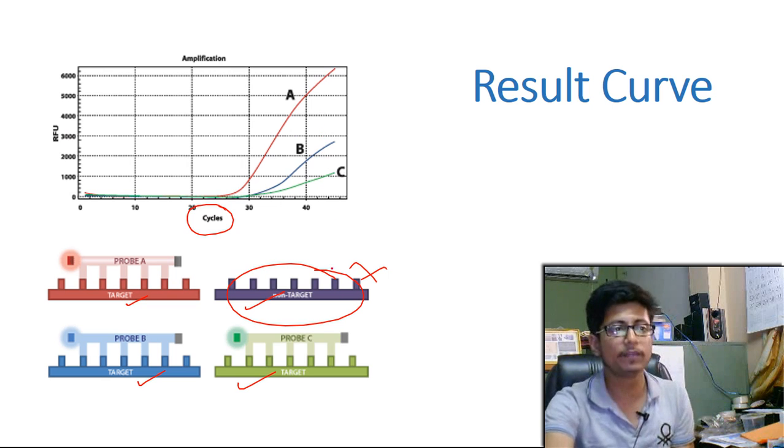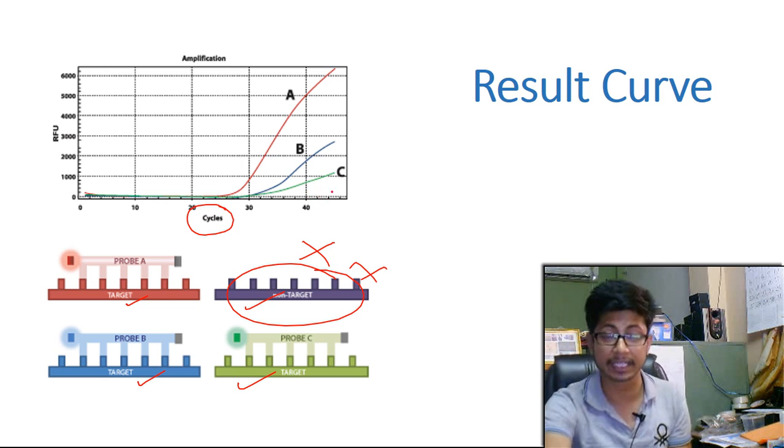If one of those fragments failed to amplify, we won't see any graph for that. We won't see any light or color change for that specific target. That will also help us identify which DNA fragment is not present or if there's any problem during the PCR reaction.